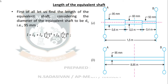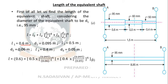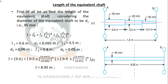The formula for the equivalent length of the shaft is: L = L1 + L2·(D1/D2)⁴ + L3·(D1/D3)⁴. Substituting: L1 = 0.6 m, D1 = 0.095 m, L2 = 0.5 m, D2 = 0.06 m, L3 = 0.4 m, D3 = 0.05 m. So: L = 0.6 + 0.5·(0.095/0.06)⁴ + 0.4·(0.095/0.05)⁴. Solving this gives the equivalent shaft length of 8.95 meters.